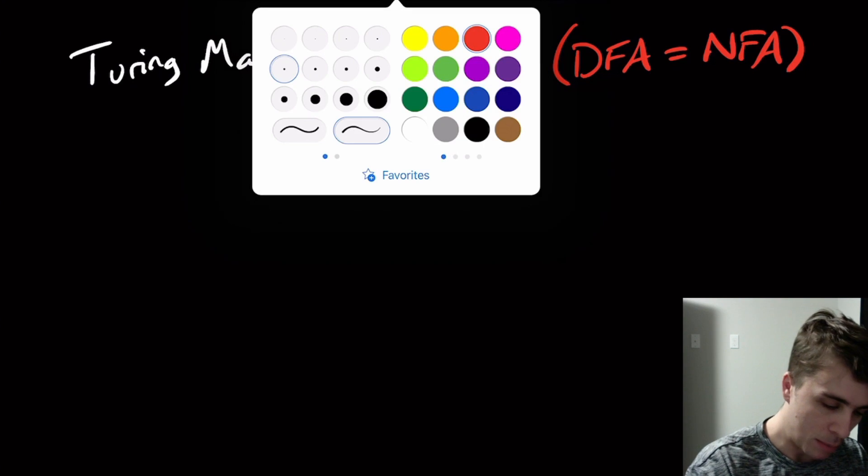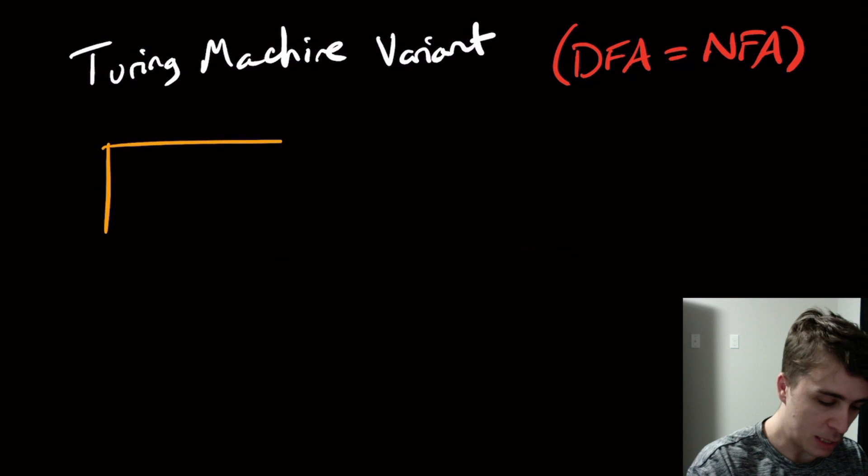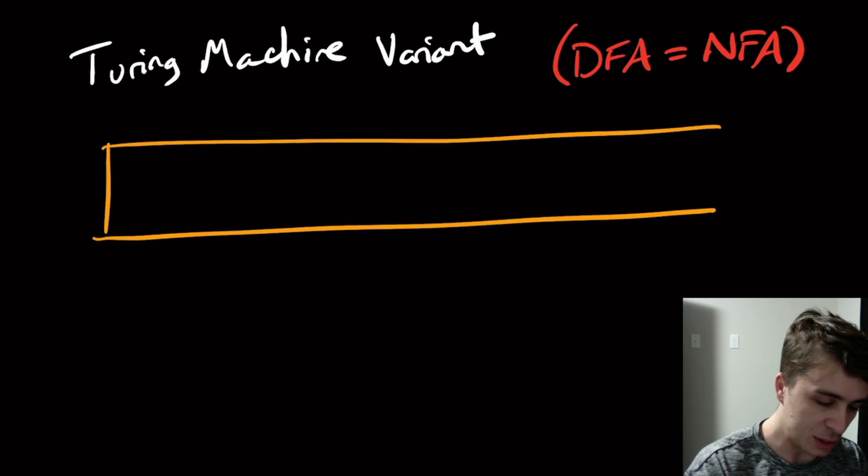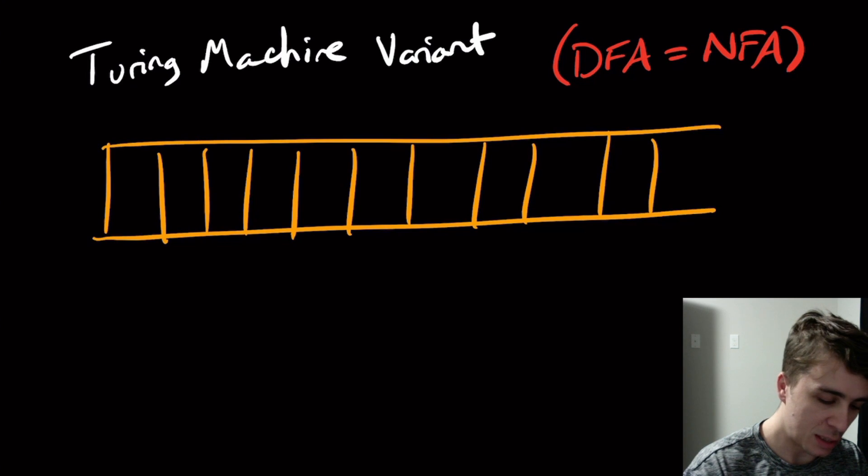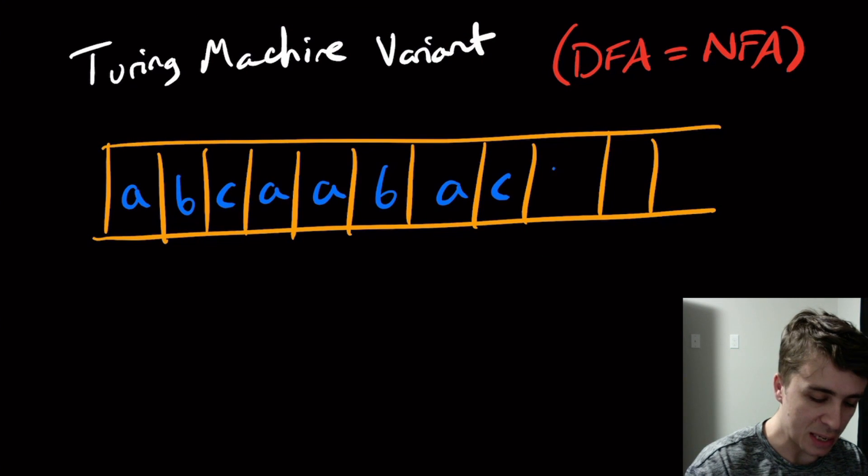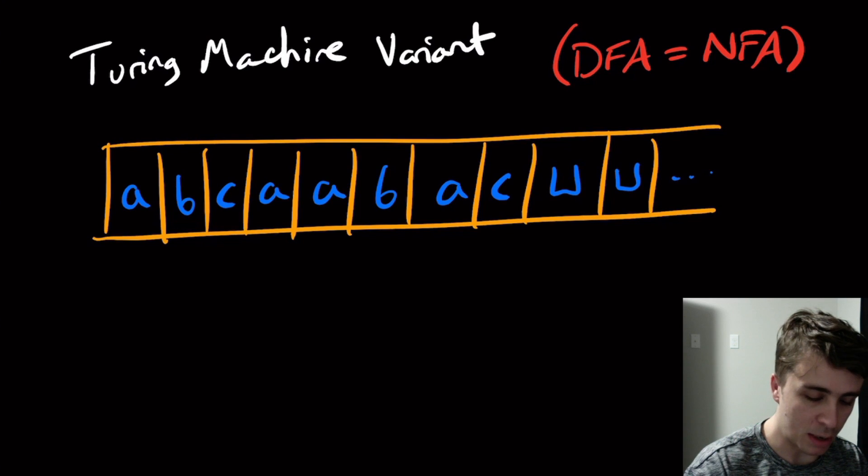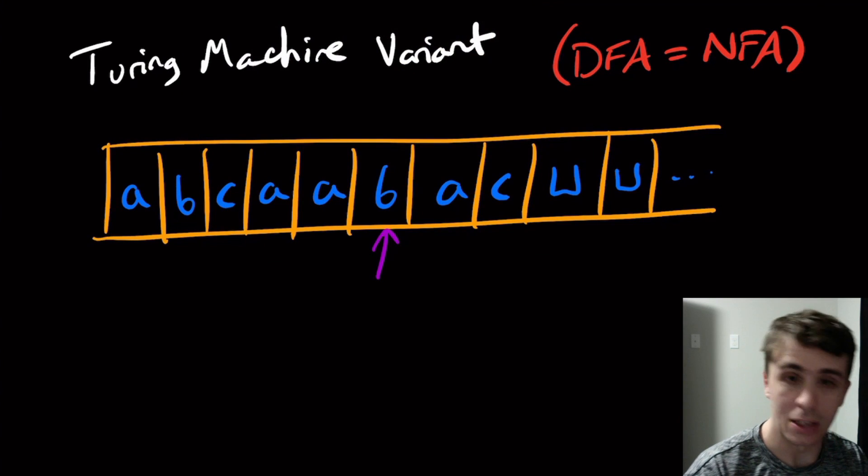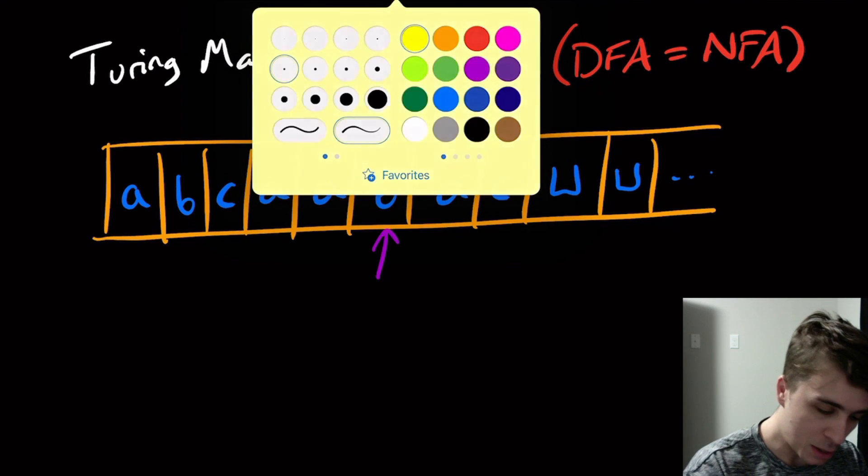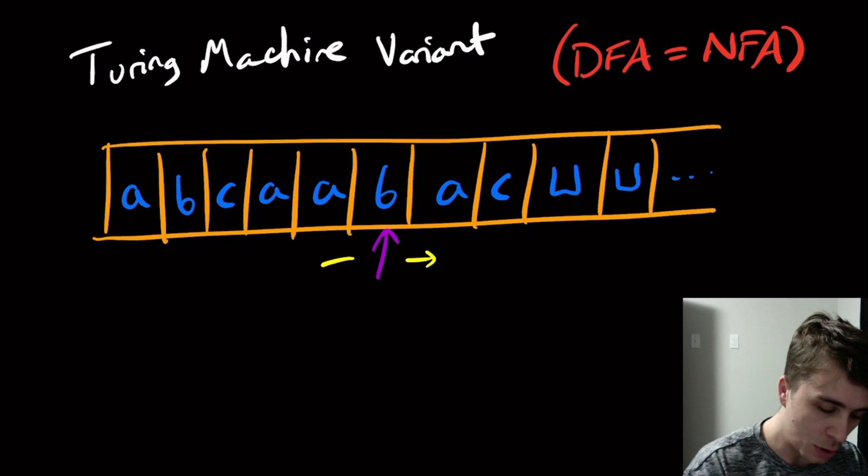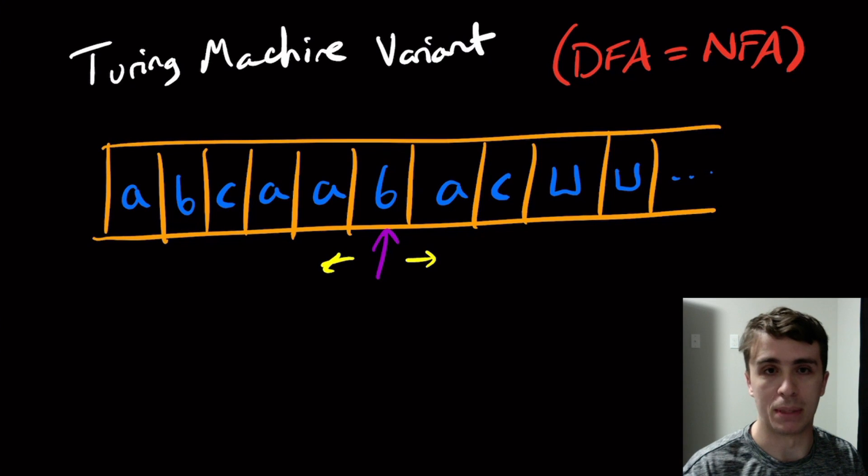So remember what the Turing machine model does is that we have this one-way infinite tape in a bunch of cells and in the cells we have certain values such as A, B, C, A, A, B, A, C, and then blank symbols somewhere. And we have this thing called the tape head that's looking at a certain position. And on each transition it either moves right or left one position.